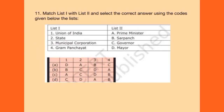Next question: match List 1 with List 2. Union of India — Prime Minister; State — Governor; Municipal Corporation — Mayor; Gram Panchayat — Sarpanch. The correct order is A, C, D, B — so option C is correct.